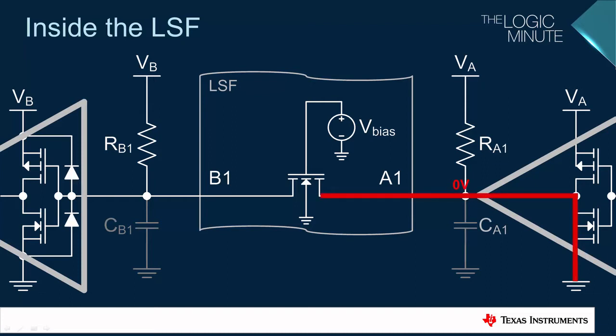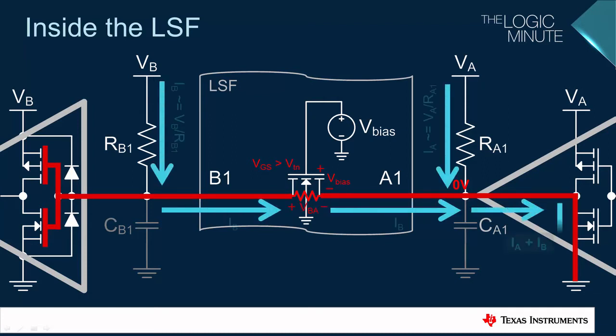When the transmitter is driving the input low, the channel 1 FET of the LSF is turned all the way on and is essentially acting like a resistor. The input at the receiver is driven low as well through the FET. It's important to note that in this state, current will be generated by both pull-up resistors, and that current will sink into the transmitter.